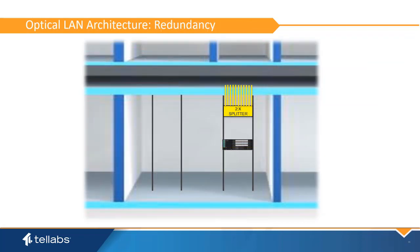Type B PON redundancy is also an option with Optical LAN. A 2x PON splitter provides both protection, redundancy, and splitting functions. This feature is supported across different PON cards in the same OLT or between different OLTs in geographically dispersed locations. This also provides a means to deliver fiber route diversity between the OLT and the splitters.